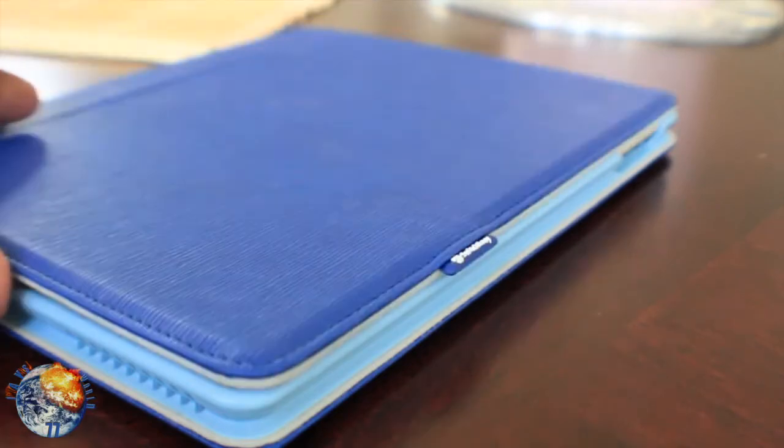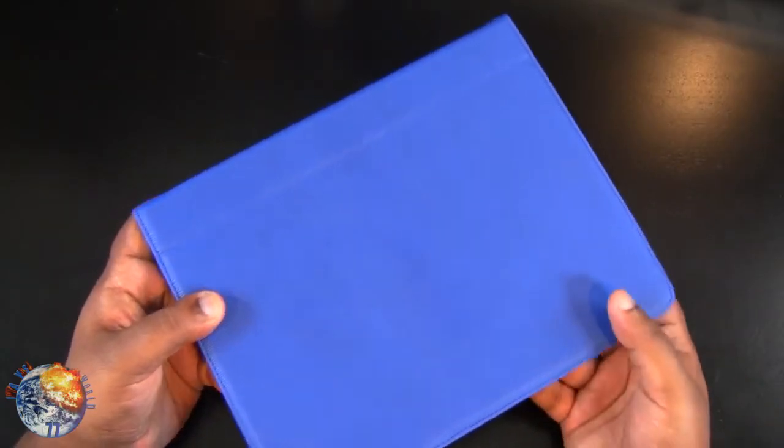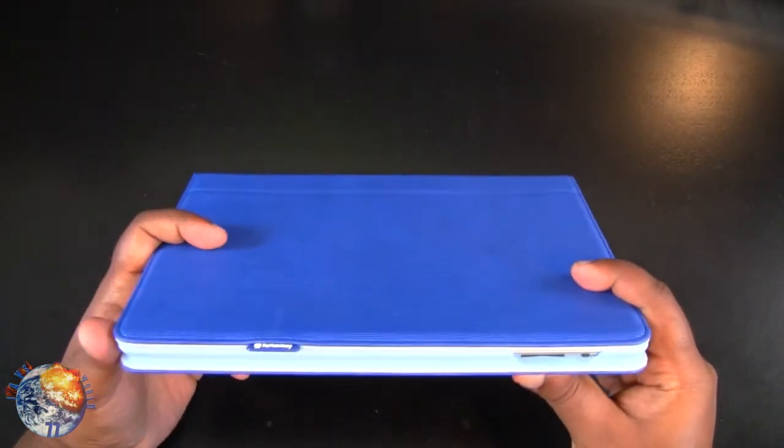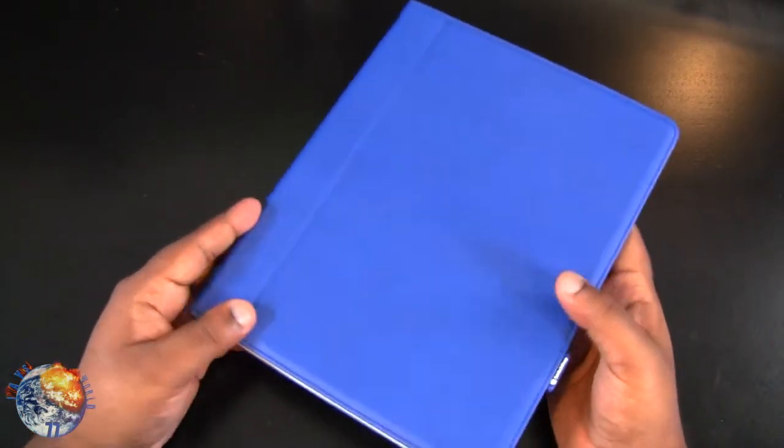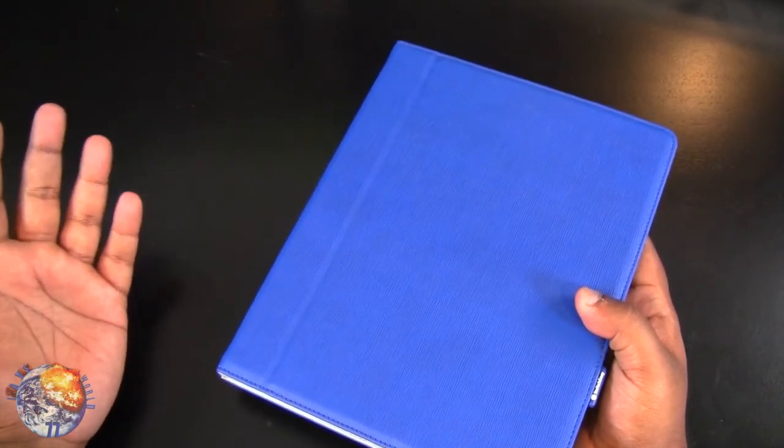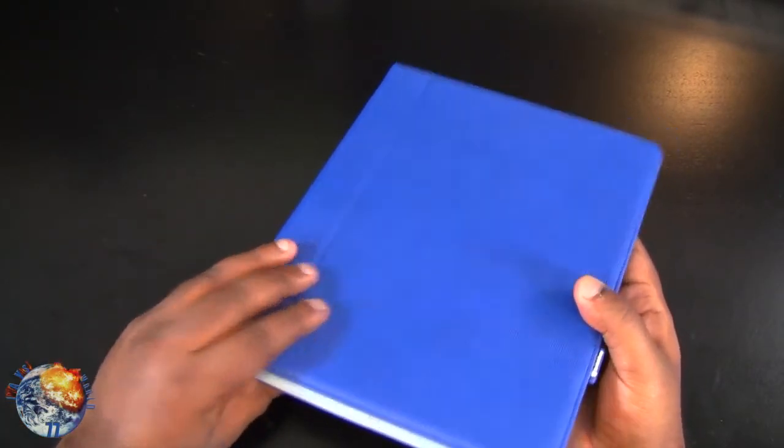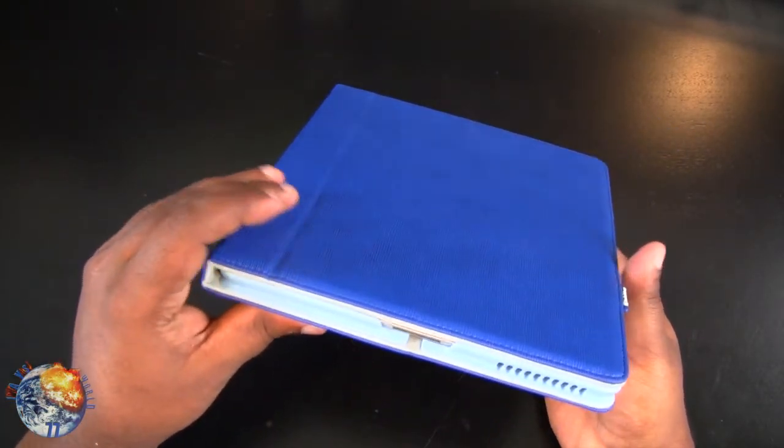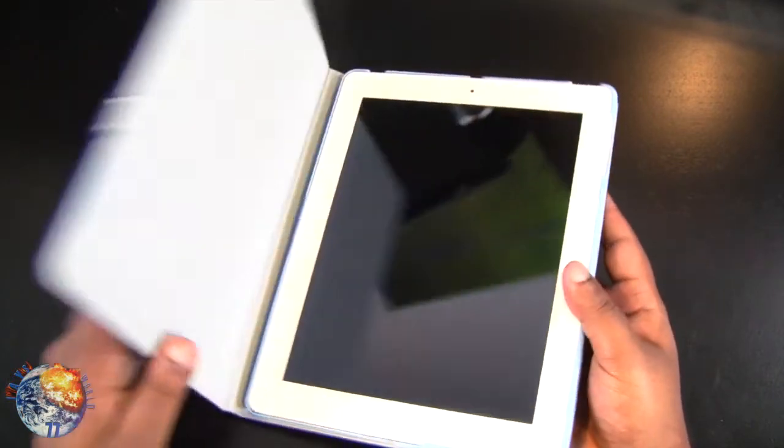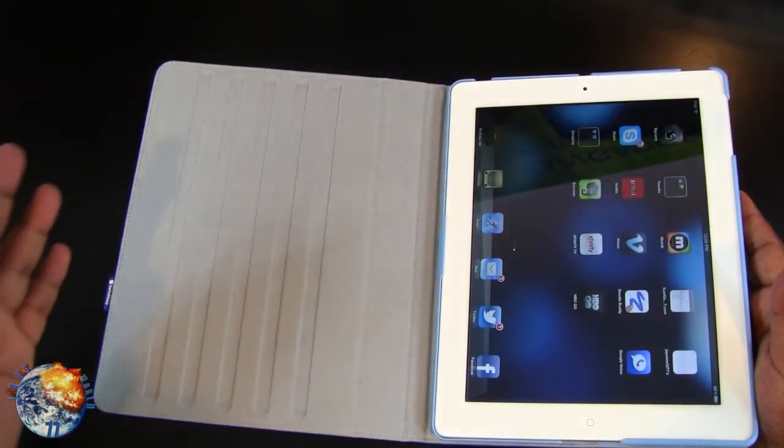This also has a sleep and wake functionality. One thing I really like about the SwitchEasy company is that they listen to their customers. They had a lot of requests to make the thinnest folio style case with a built in stand as well. So this is what they came up with and it's really thin. It's not really that bulky. Once you open this up, as you can see, it has those little grooves for your stand.